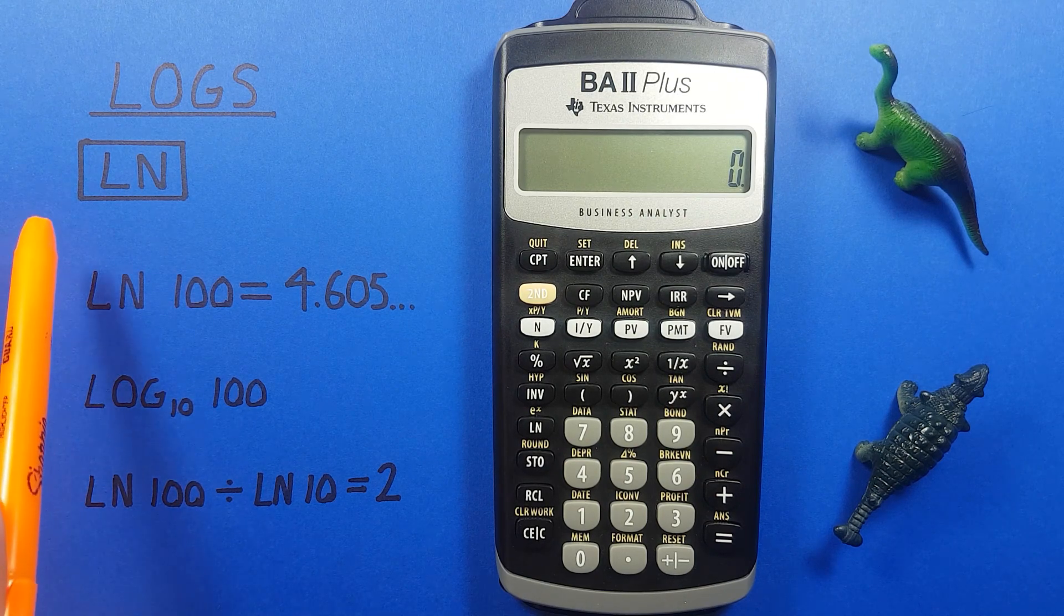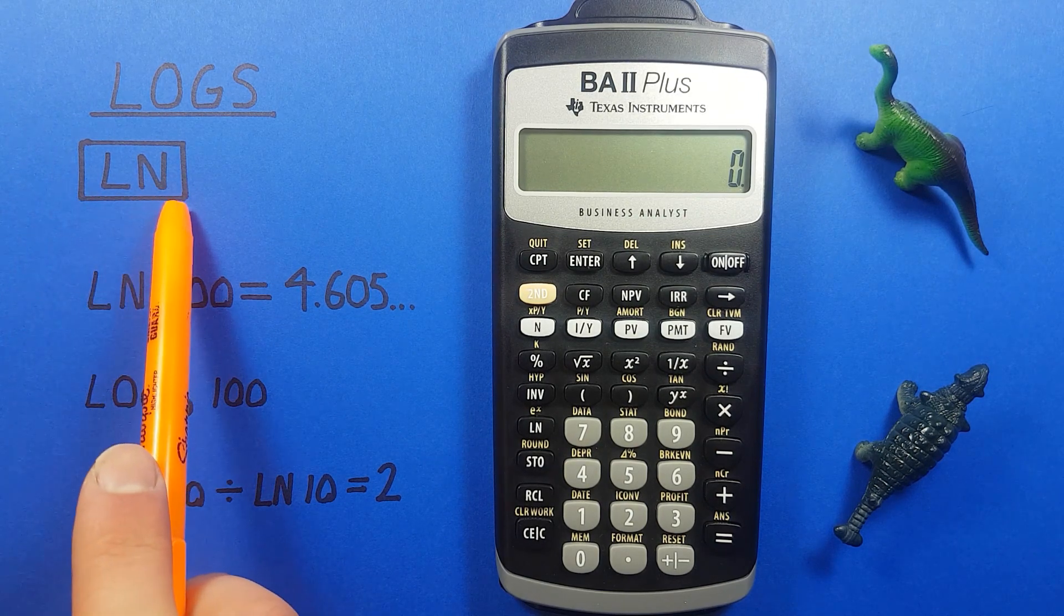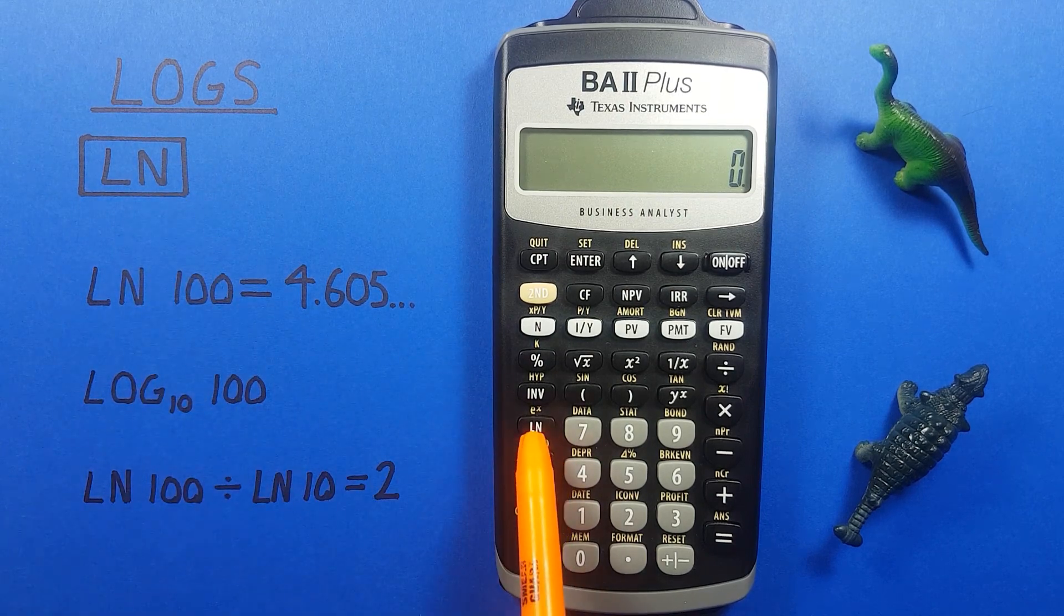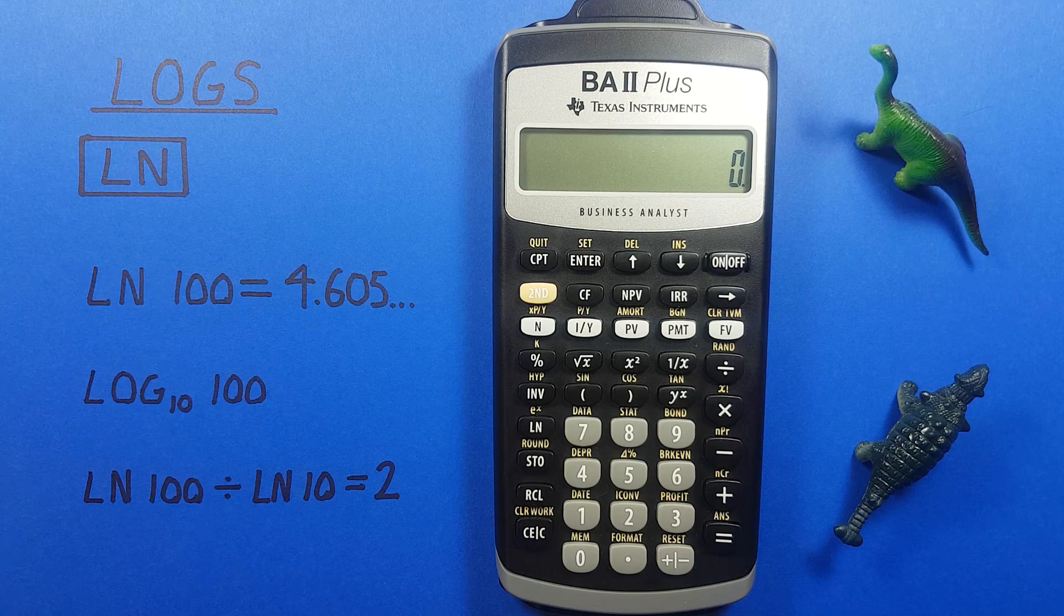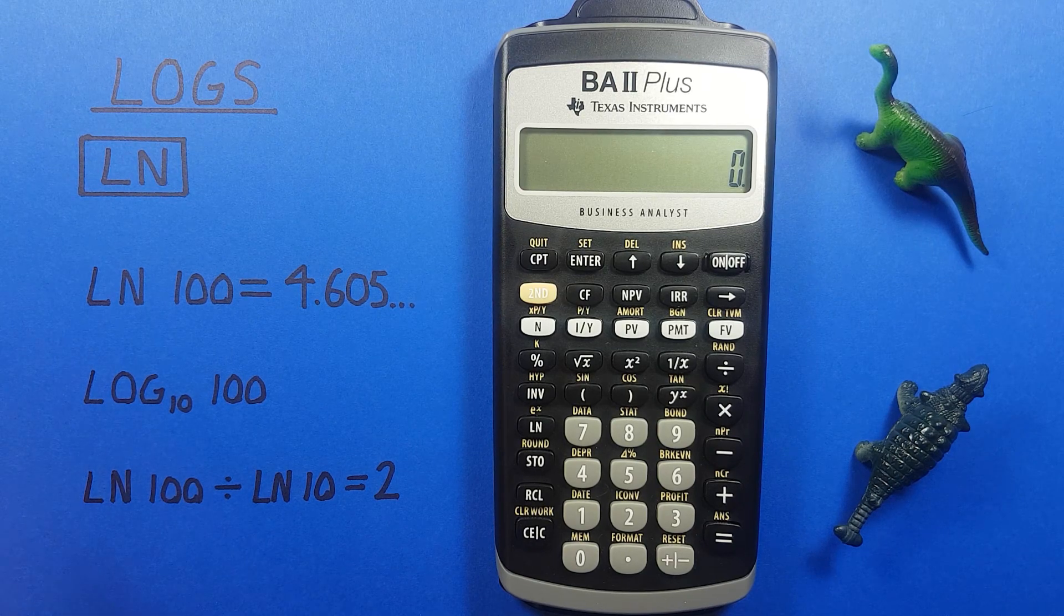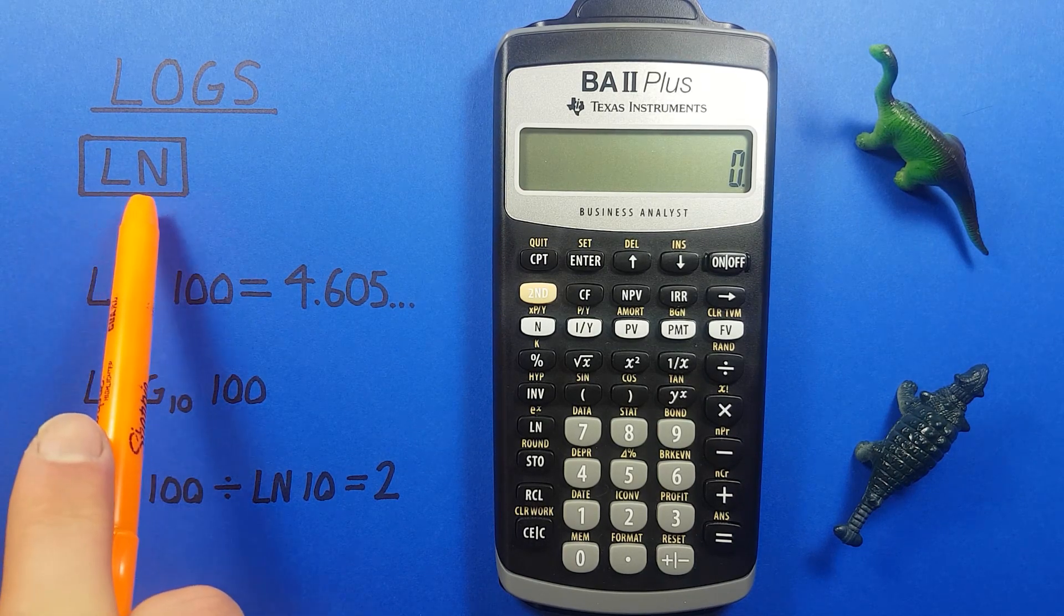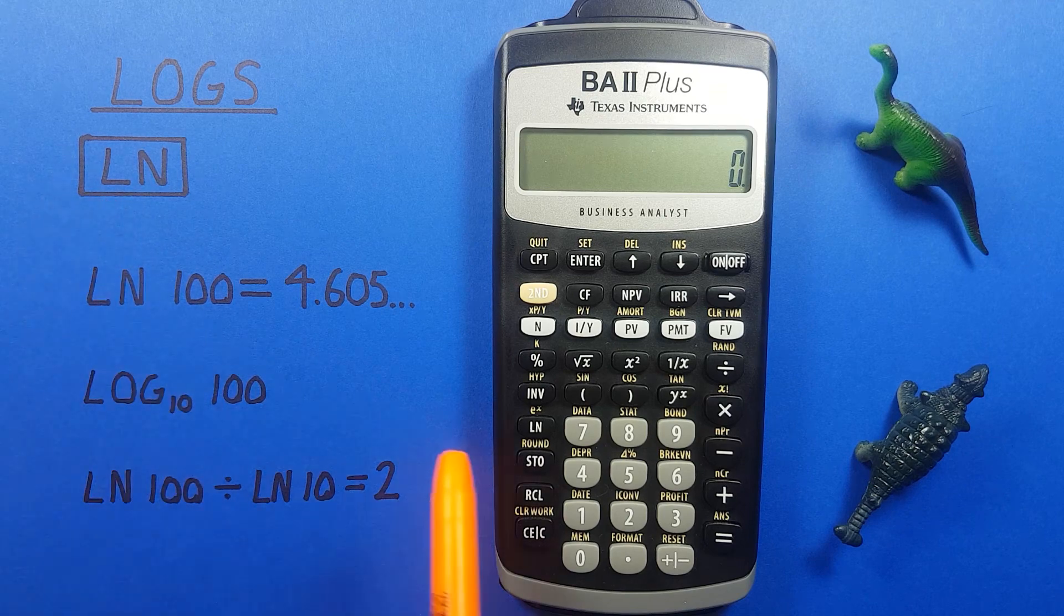To do that we'll be using the LN key or natural log key located here. Being a business calculator, we have a natural log which is the most commonly used one, and that's our LN key.